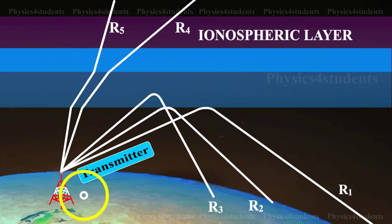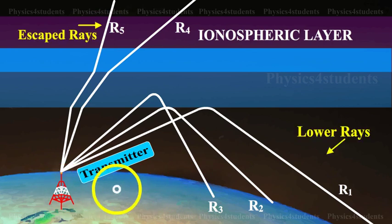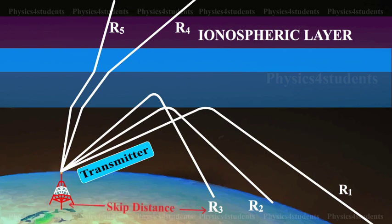the distance between the point of transmission and the point of reception is minimum. The minimum distance between the transmitter and the ray like R3, which strikes the earth, is called as the skip distance.